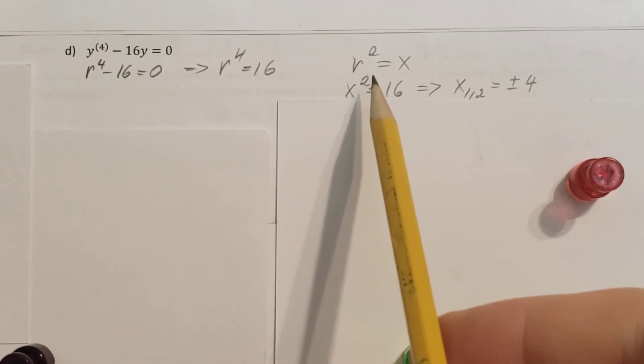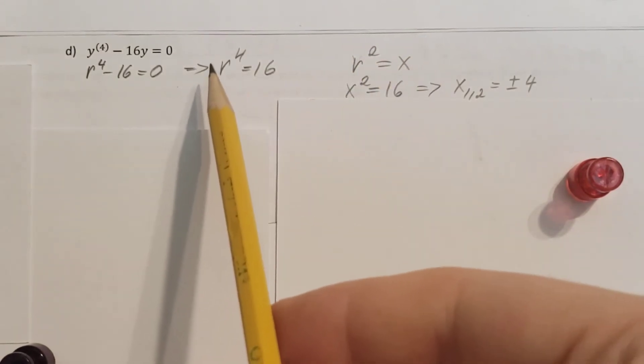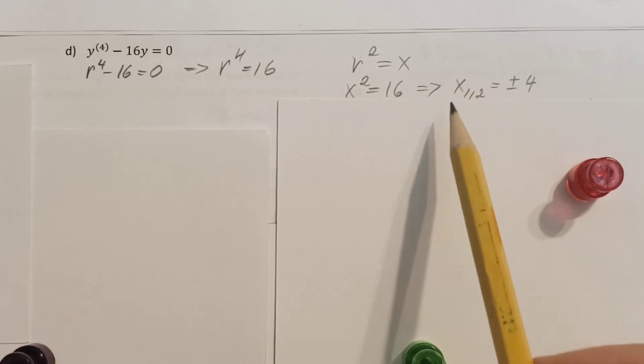To solve this, I'm simply gonna rename r squared as x, so I'll plug it in. All I am gonna have, x squared equals 16. I can solve this one. x1 and 2 is plus minus 4.